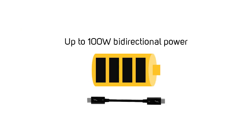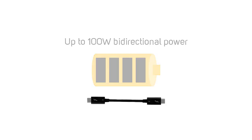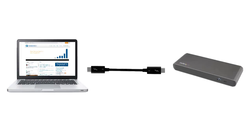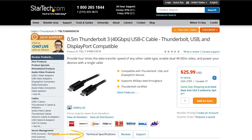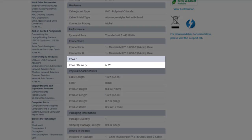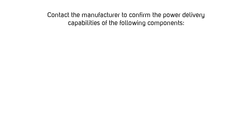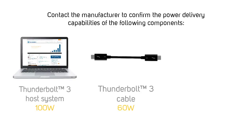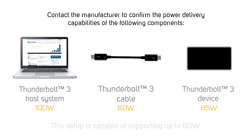Thunderbolt 3 is capable of up to 100 watts of bi-directional power. However, not all host system, cable, and peripheral device manufacturers will implement power delivery or implement power delivery at the full 100 watts. If your Thunderbolt 3 device requires power delivery to function, refer to the information provided by the manufacturer to confirm the power delivery capabilities of the following components: the Thunderbolt 3 host system, the Thunderbolt 3 cable, and the Thunderbolt 3 device.